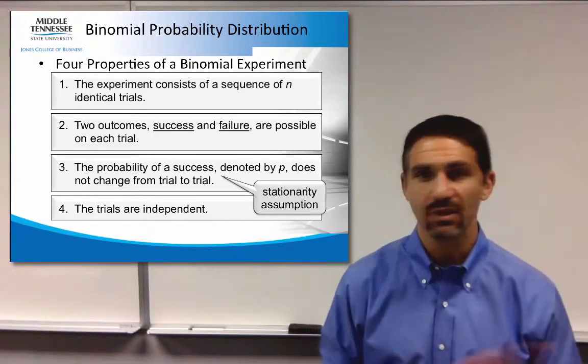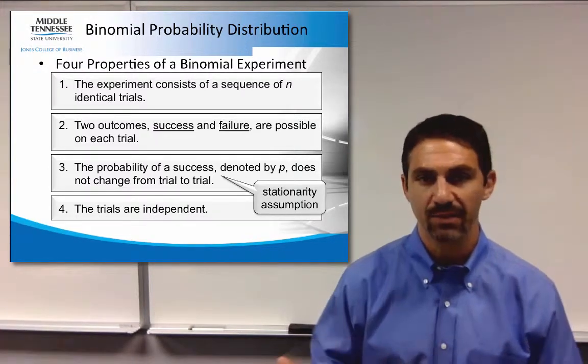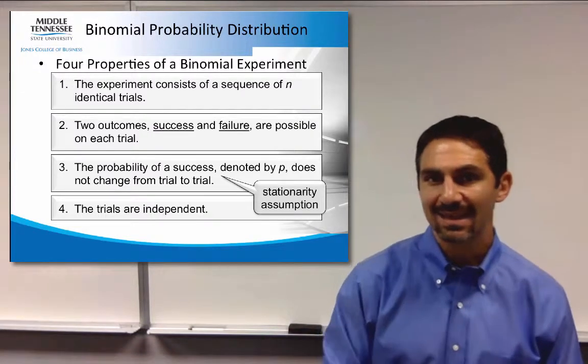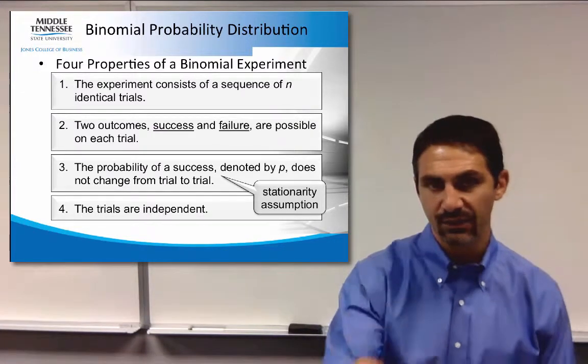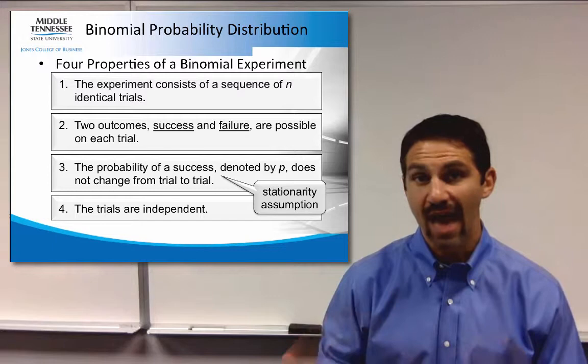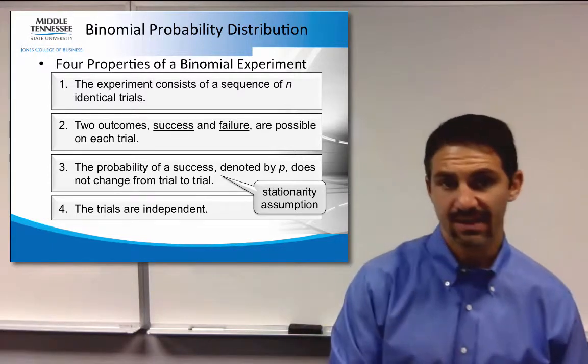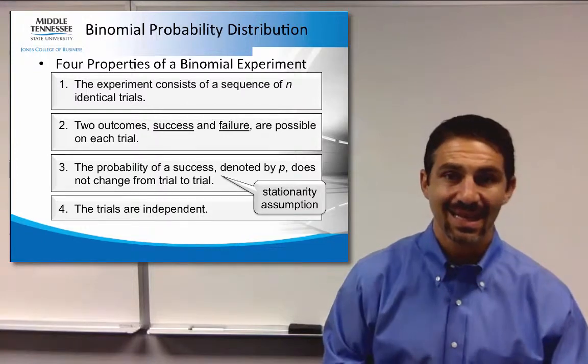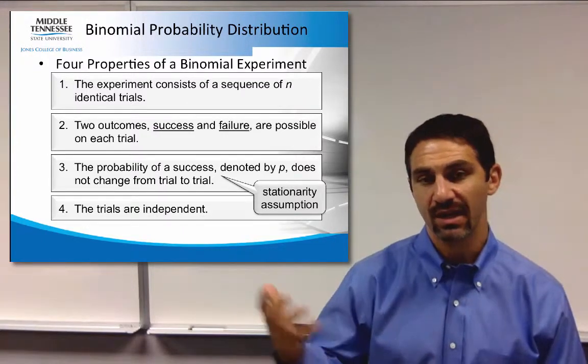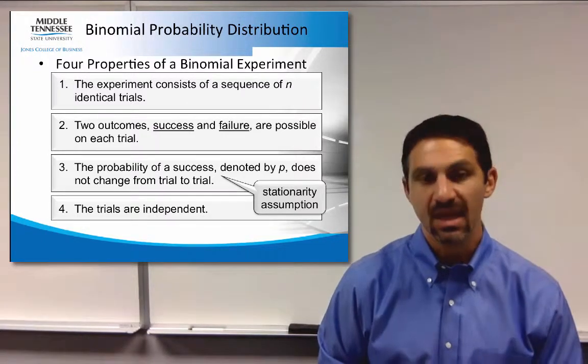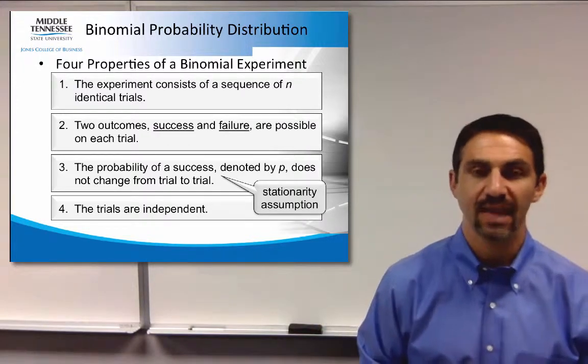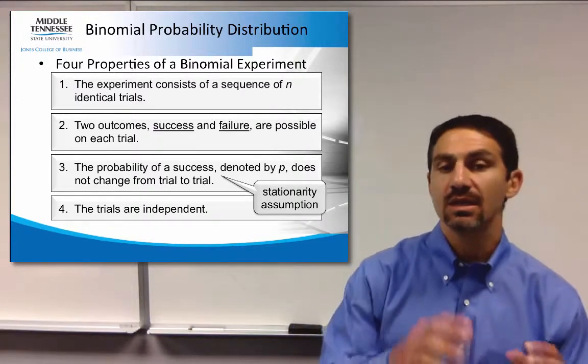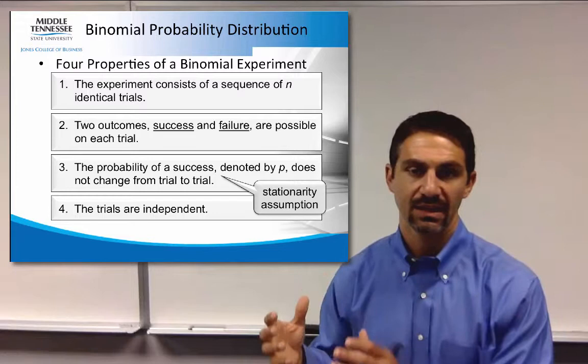The probability of success will always be denoted as p, which is the probability. And the probability of failure, then, as you should know, is nothing more than the complement of success. And so if it's 30% chance of success, the complement of that is 70%, which is then the failure. And the trials are independent, which means that whatever happens on the first trial does not affect what's going to happen on the second trial.